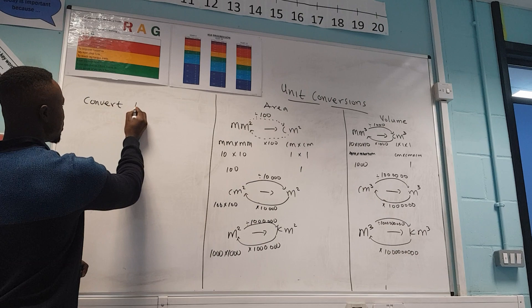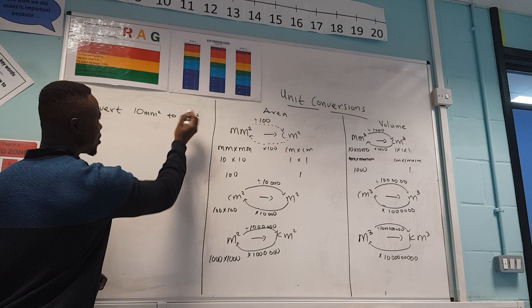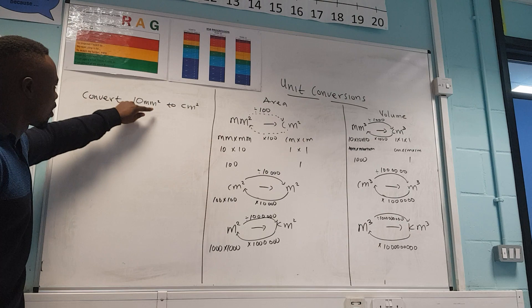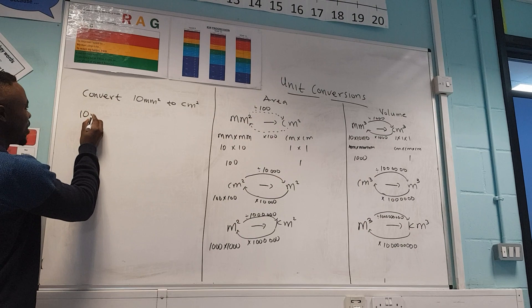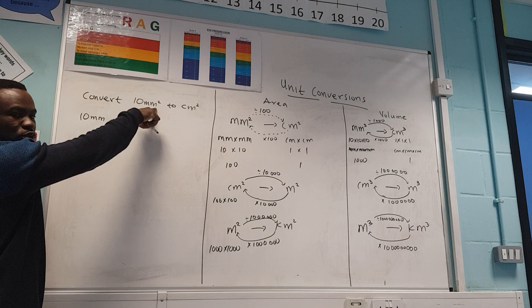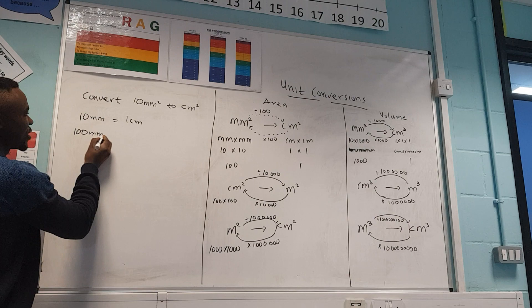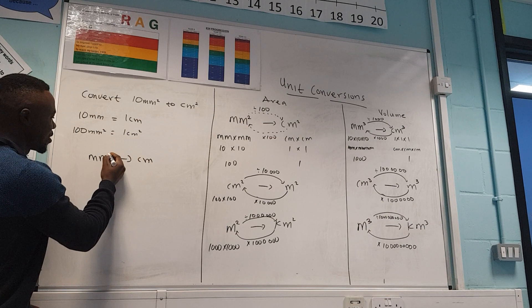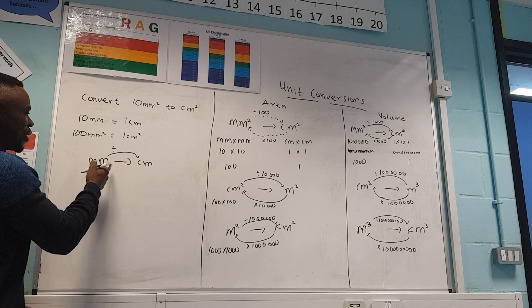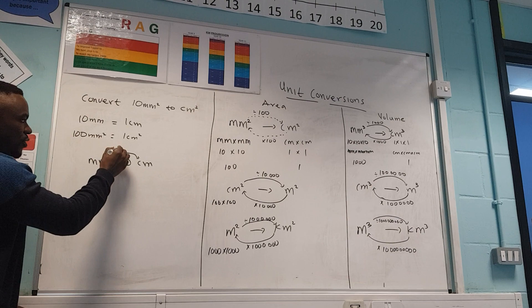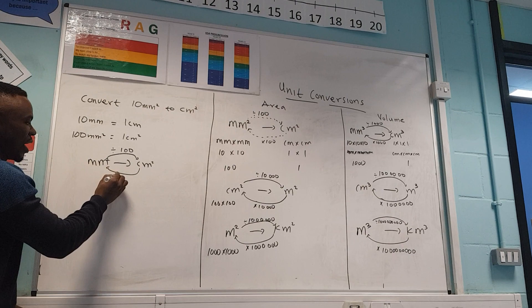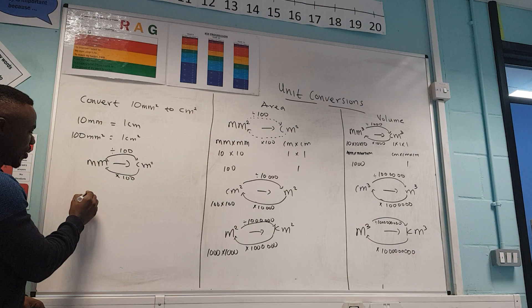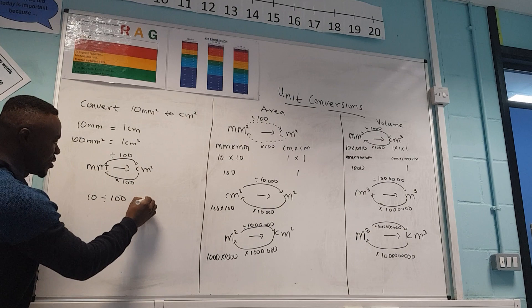Convert 10 millimeters squared to centimeters squared. The number you don't look at — you look at the unit: millimeters squared. We know 10 millimeters equals one centimeter, so if it's squared, I need to square that: 100 millimeters squared equals one centimeter squared. Moving from millimeters squared to centimeters squared, the number has to be smaller, so I divide by 100. The answer is 10 divided by 100, which equals 0.1 centimeters squared.